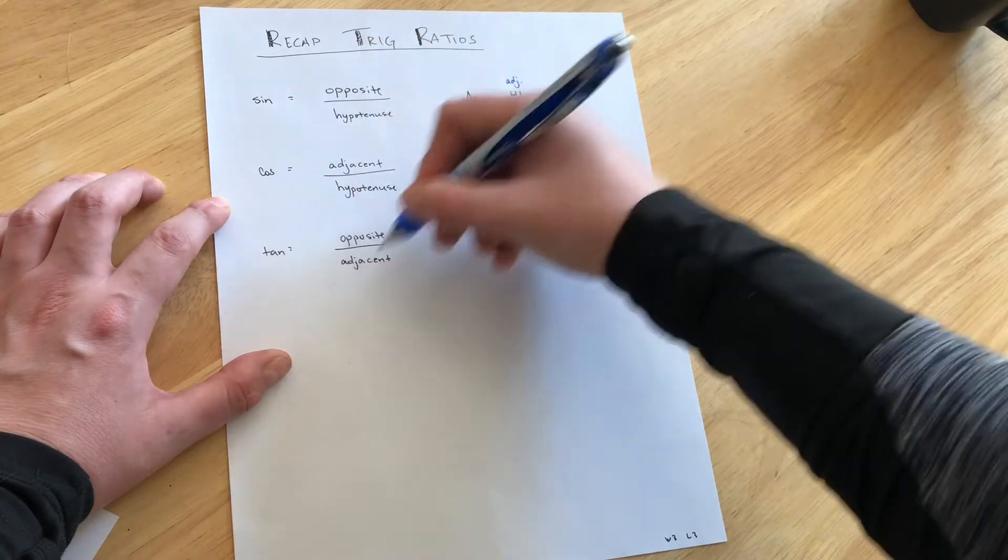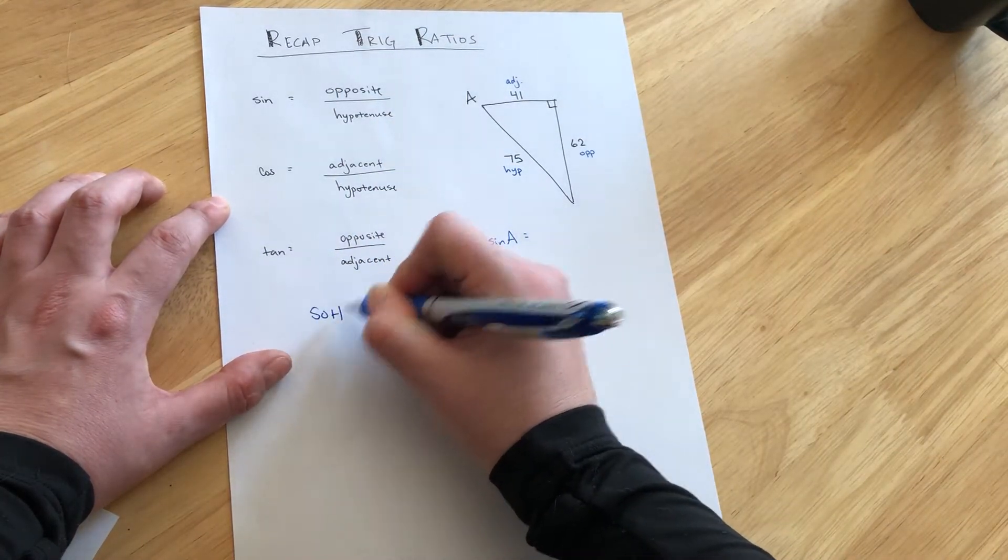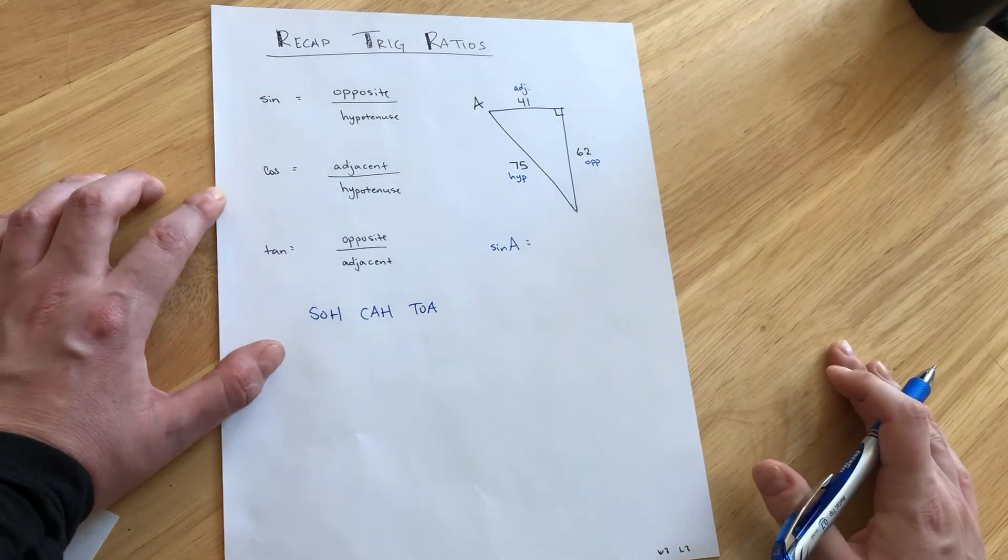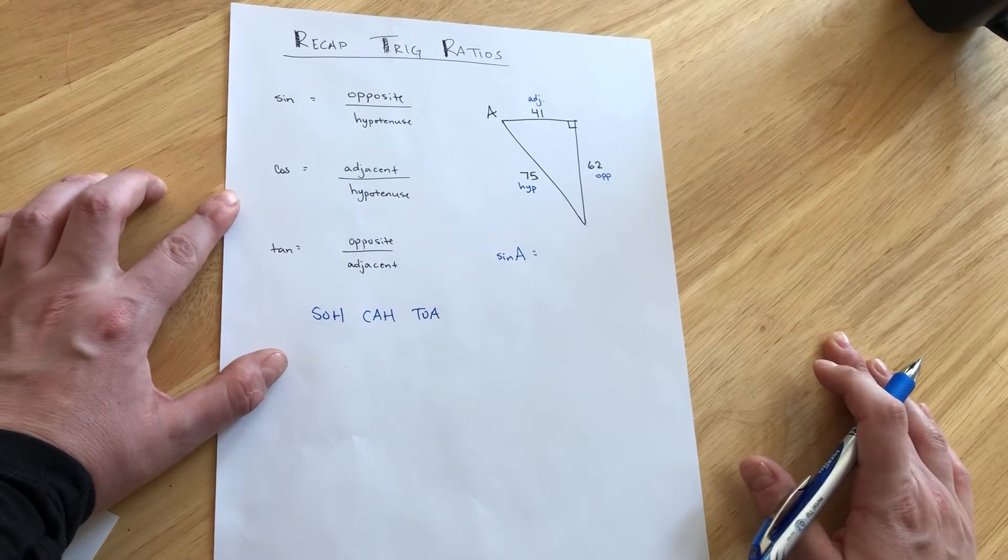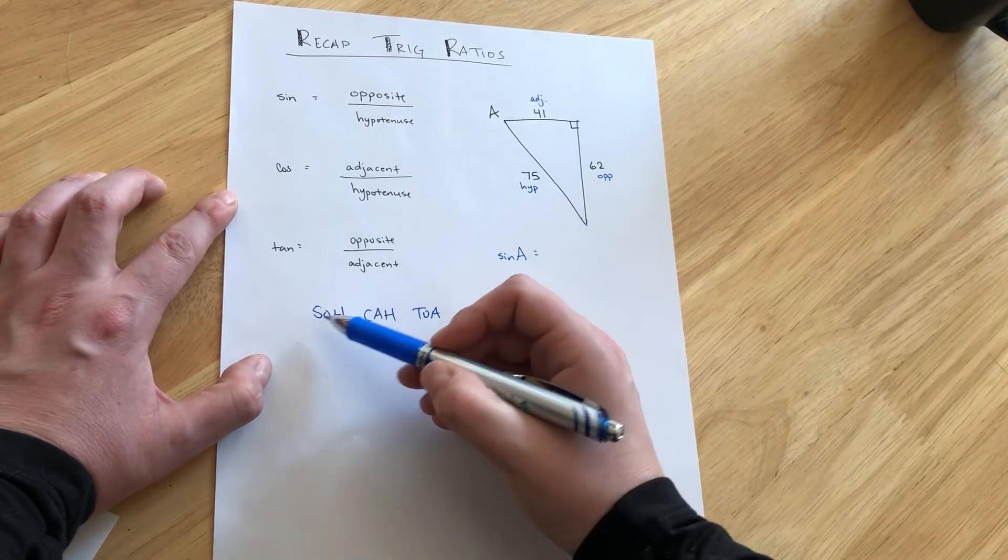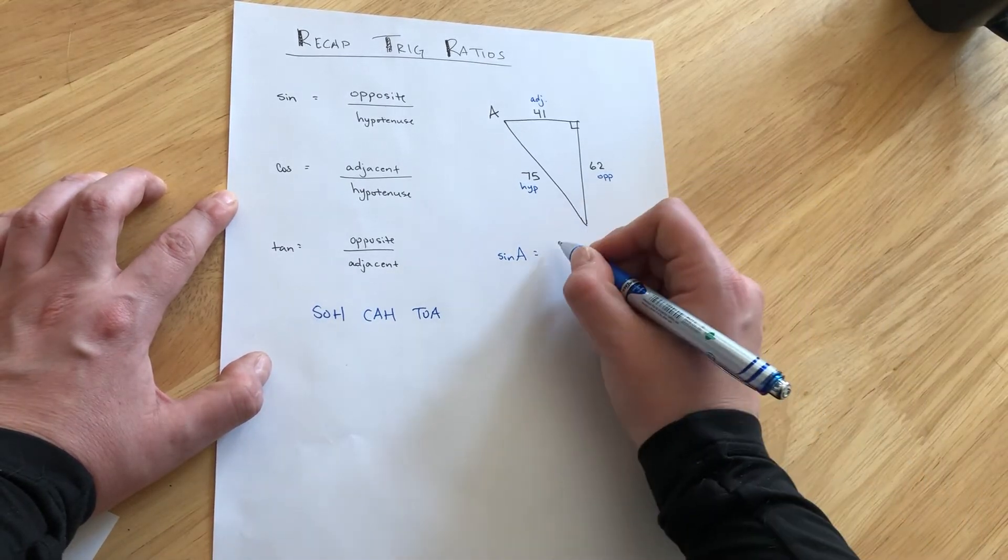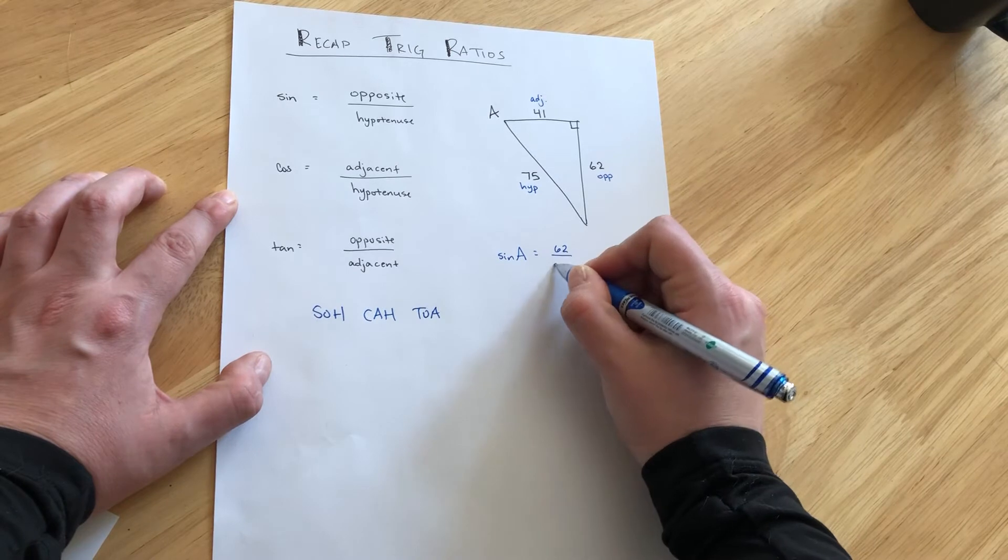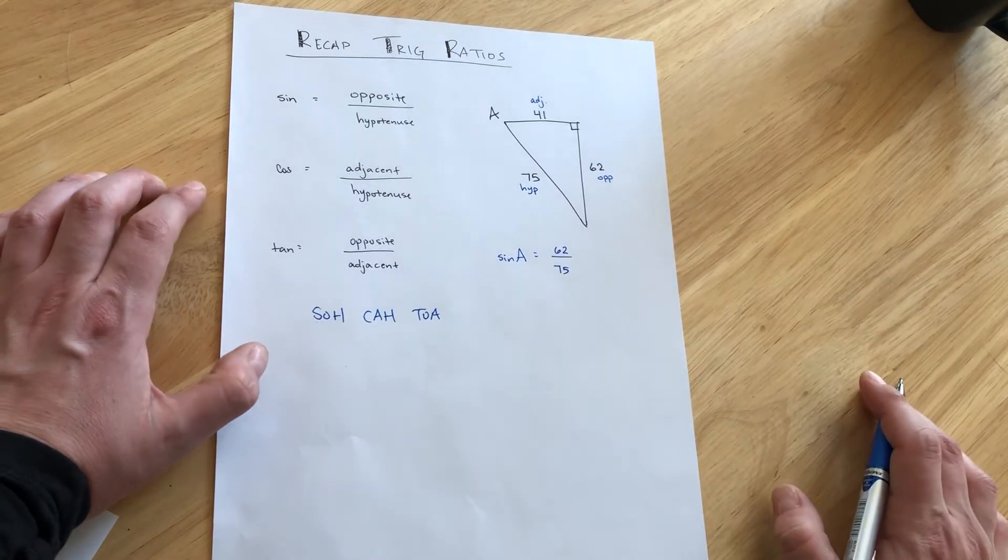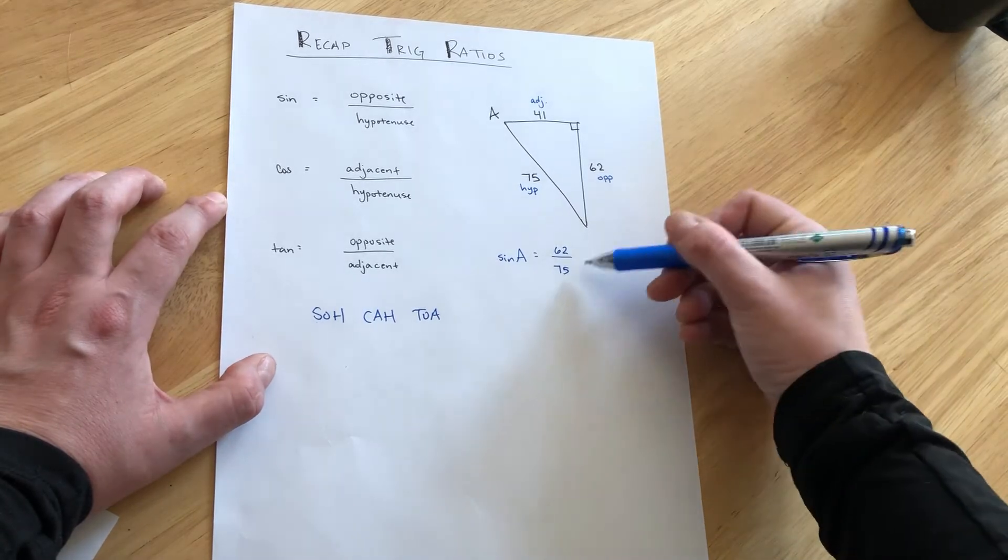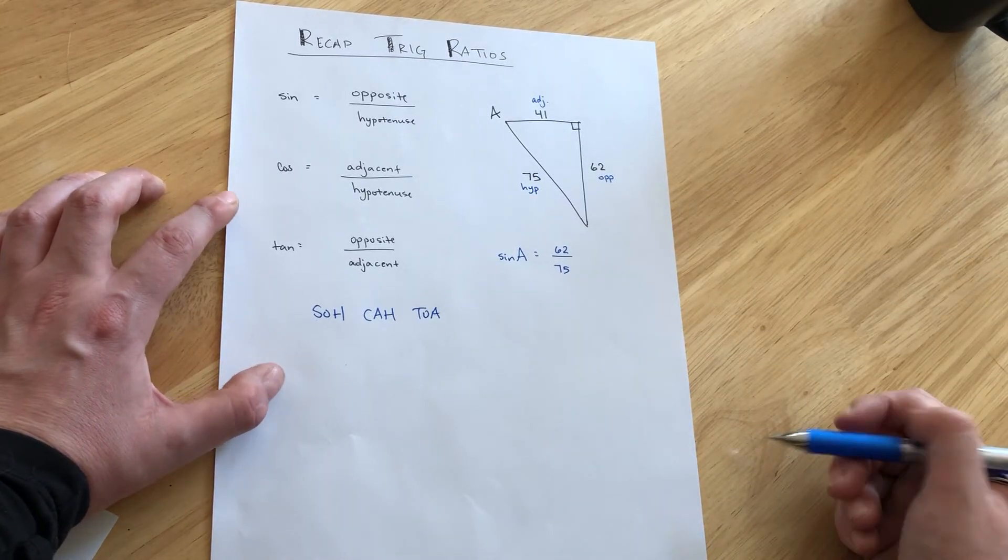So we have these all written out here. But if you like the SOH-CAH-TOA to help remember what these letters and ratios go with, sine puts the opposite over the hypotenuse, so 62 over the hypotenuse 75. And the good news about the game today is that they don't even ask you to reduce. You can just leave your fraction just like that.